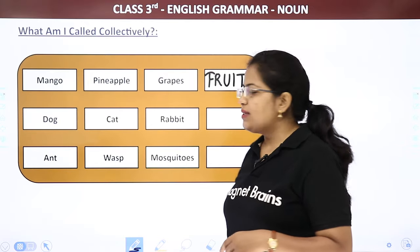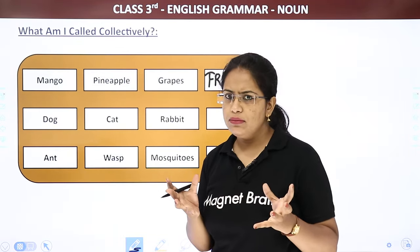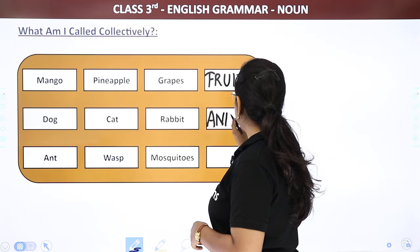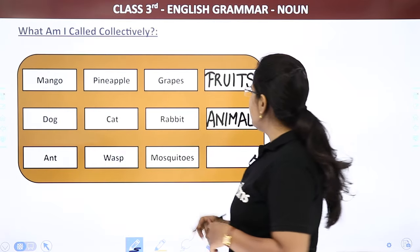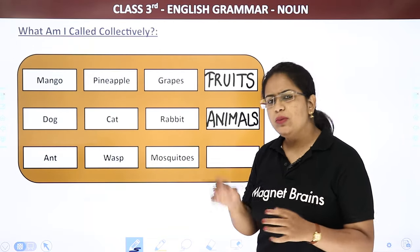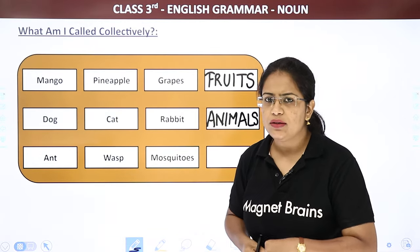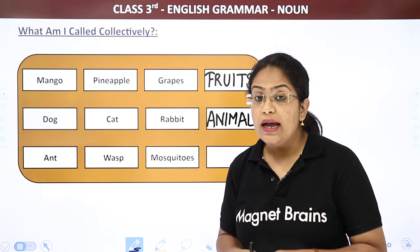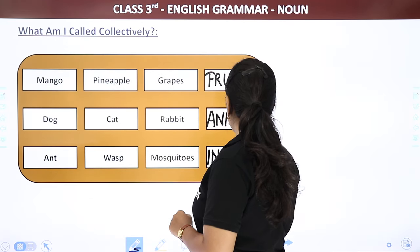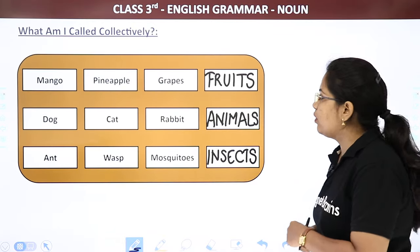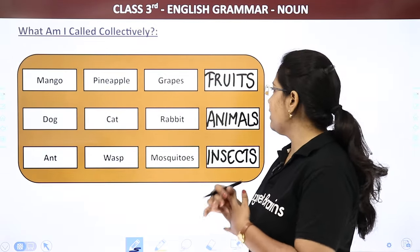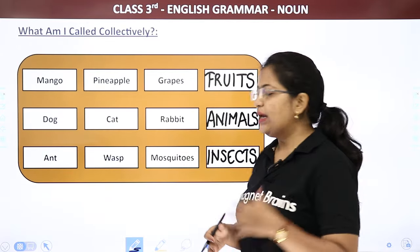Next is dog, cat, and rabbit. What are they? They are animals. So the collective noun is animals. The last one is ant, wasp, and mosquitoes. What is an ant? Cheeti. Madhu makhi. Bhavra. Machhar. What are these? They are insects! So: mango, pineapple, grapes are fruits; dog, cat, rabbit are animals; ant, wasp, mosquitoes are insects.